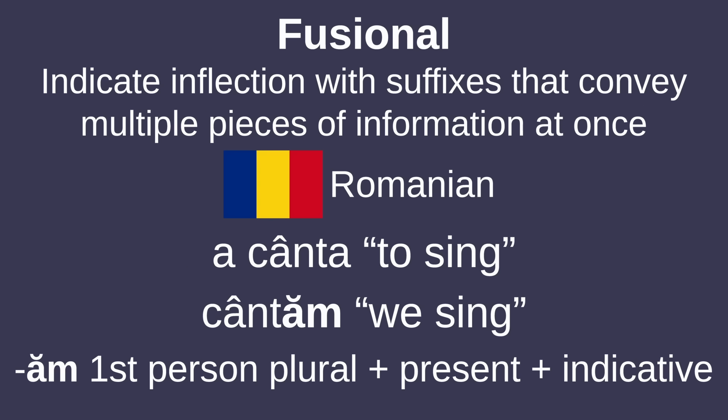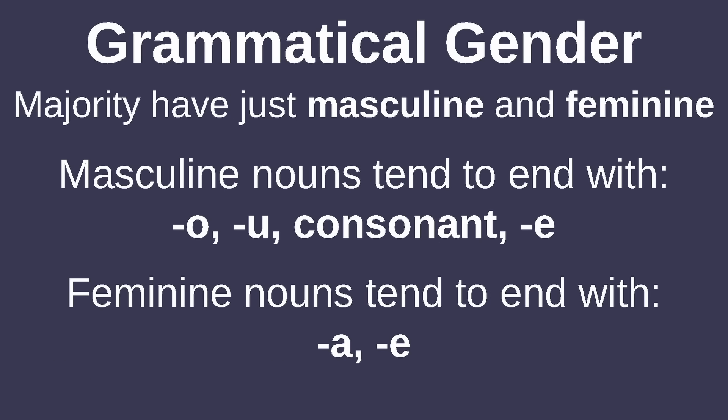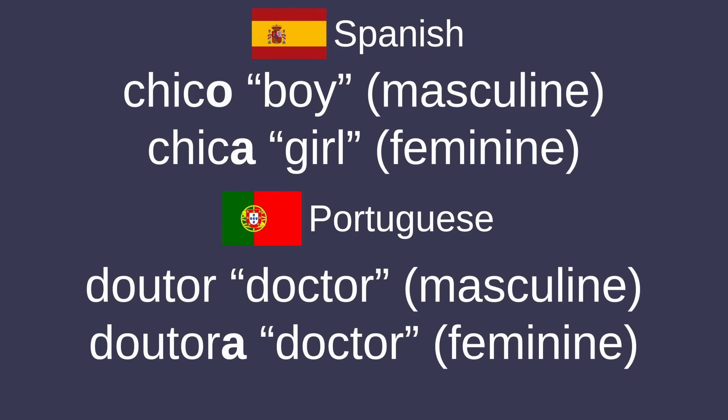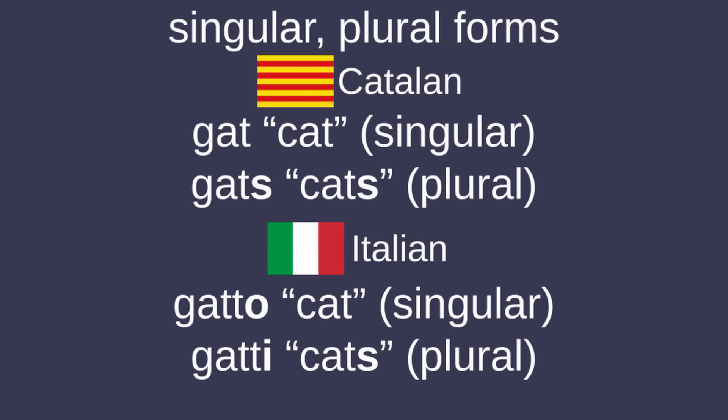As a whole, Romance languages are fusional, meaning they indicate grammatical inflection with suffixes which convey multiple pieces of grammatical information at once. All Romance languages have grammatical gender, with masculine and feminine genders present in all of them. Masculine nouns tend to end with vowels similar to O or with a consonant, while feminine nouns tend to end with A. Most nouns referring to people have different forms depending on the gender they refer to. Nouns have singular and plural forms.